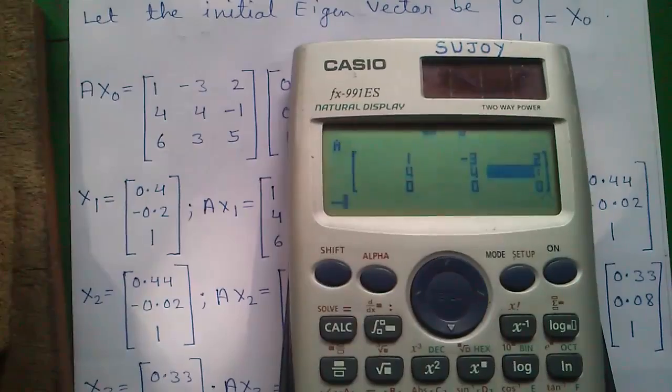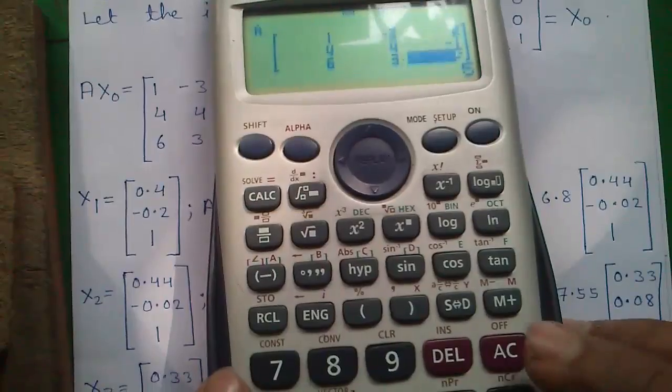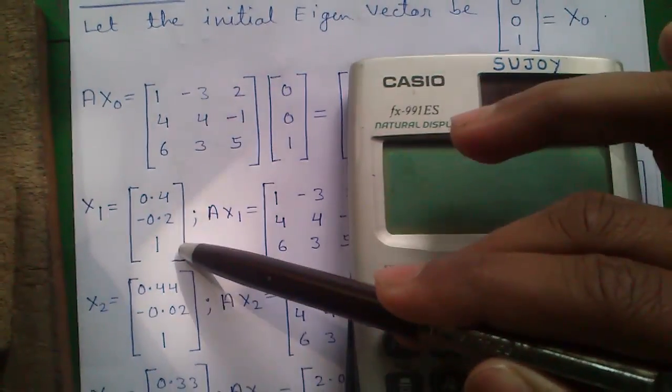So: 1, -3, 2, 4, 4, -1, 6, 3, 5. Press AC to clear the screen.